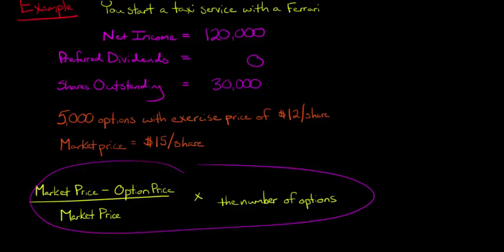So let's calculate it out. In this example, we've got $15 market price minus a $12 option price. Here's the $12 option price, here's the $15 market price, and then we divide that by the market price, which is 15, and then we multiply that by the number of options. We have 5,000 options, so we multiply that by 5,000.